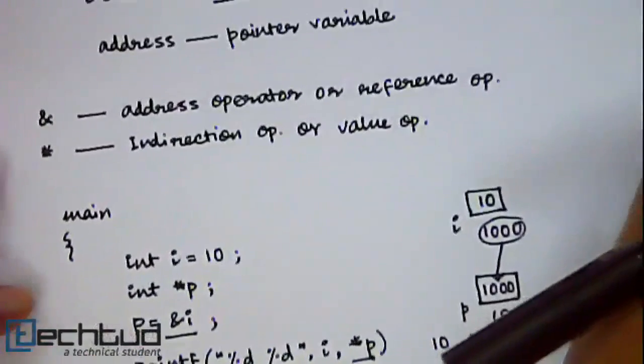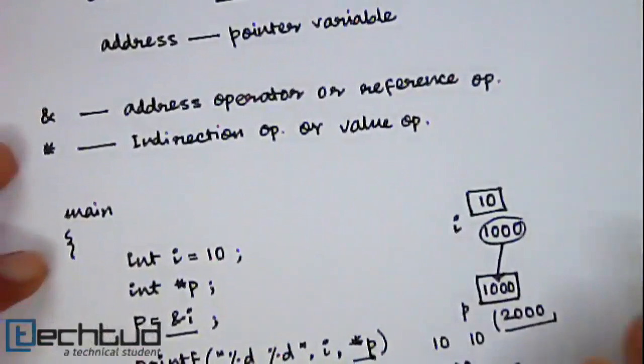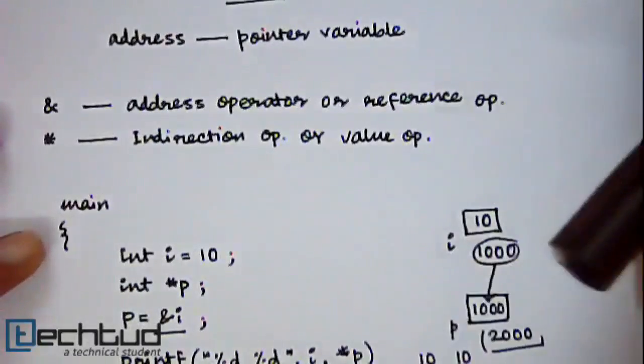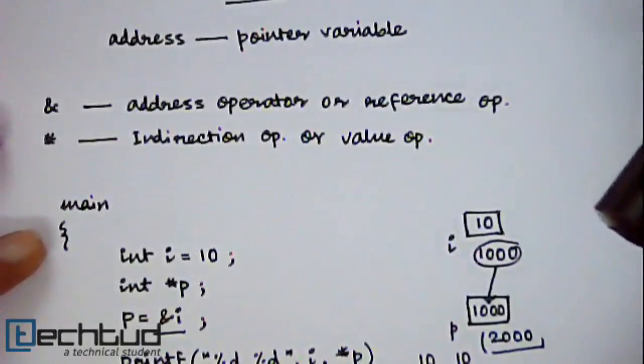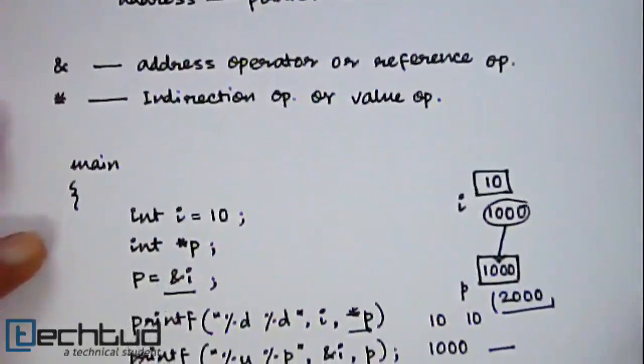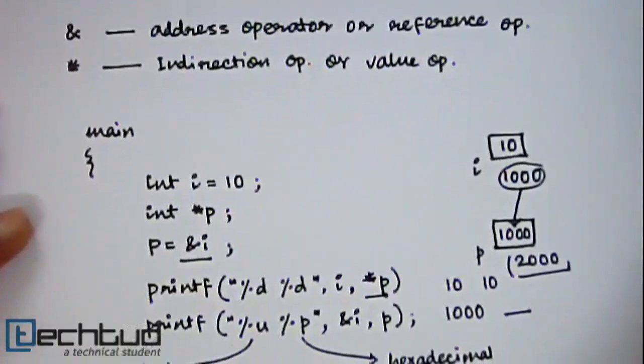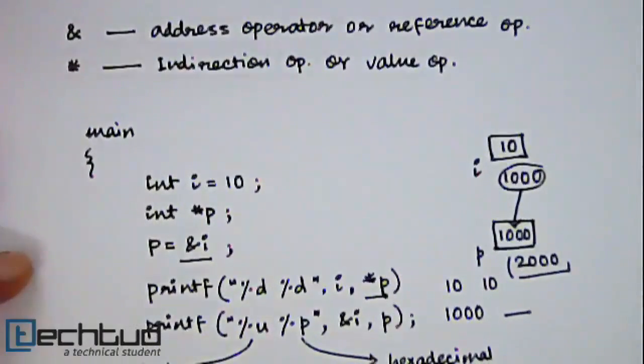So as I have explained this example using int variable. You can have similar examples using any other data type. And for each data type the type of pointer will vary. Because according to the size of your data type the particular type of pointer which is used varies. So if you have any doubt you can ask in our doubt section. Thank you for watching.